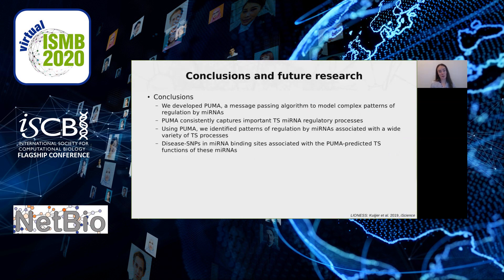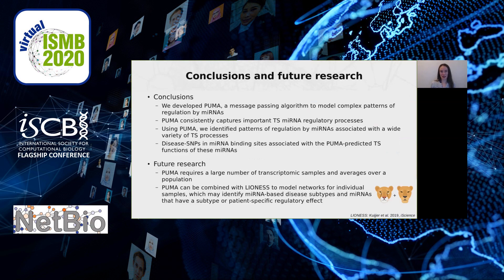To conclude, we developed PUMA, a message-passing algorithm to model complex patterns of regulation by microRNAs. PUMA consistently captures important tissue-specific microRNA regulatory processes, and we identified patterns of regulation associated with a wide variety of tissue-specific processes. Disease SNPs in microRNA binding sites were associated with PUMA-predicted tissue-specific functions. A limitation is that PUMA requires a large number of transcriptomic samples and averages over the population. We recently developed a method called LIONESS that can extract networks for individual samples, and in the future we would like to combine PUMA with LIONESS to identify patient-specific edges that might be deregulated.